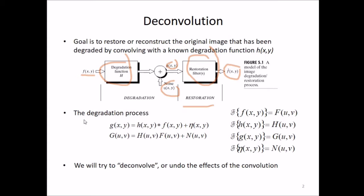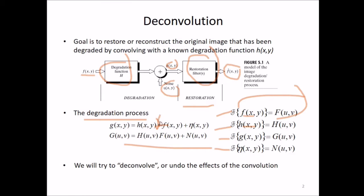The degradation process is: G(x,y) equals H(x,y) convolved with F(x,y) plus η(x,y). In the frequency domain, if we convert all these using Fourier domain conversion, this convolution in the frequency domain is equal to multiplication in the spatial domain and vice versa. So this is our expression — the model of image degradation.